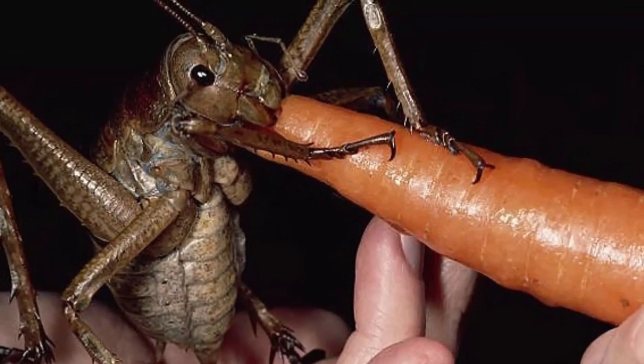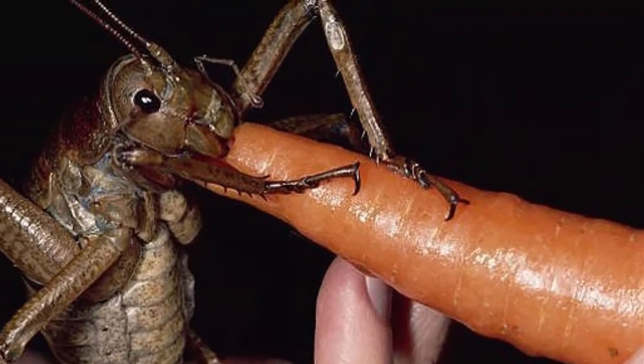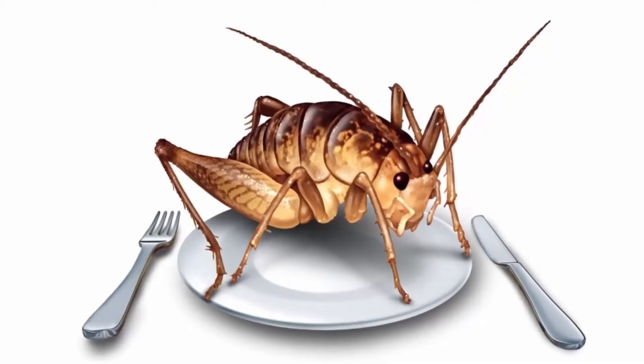They are omnivorous, they eat plants, roots, seeds and sometimes other insects and even other crickets.